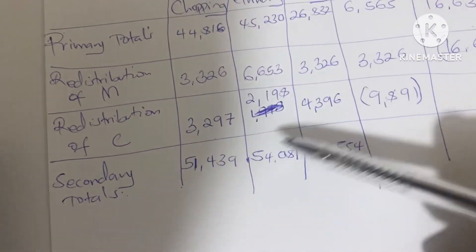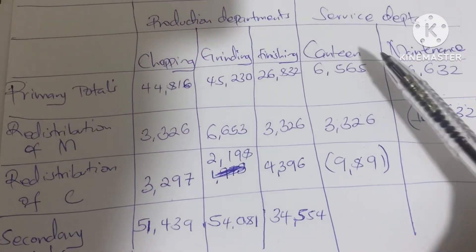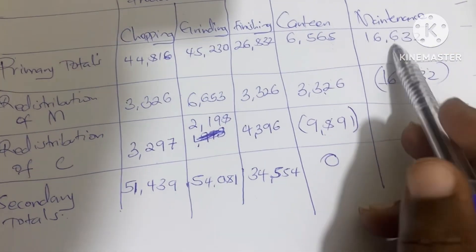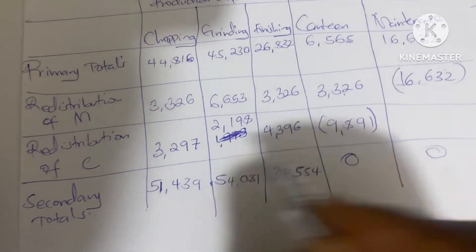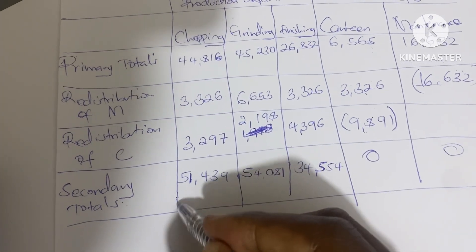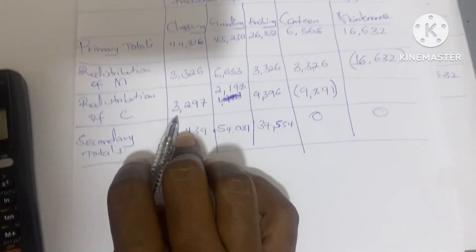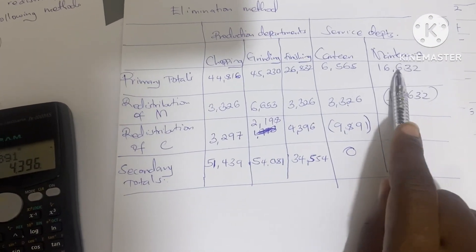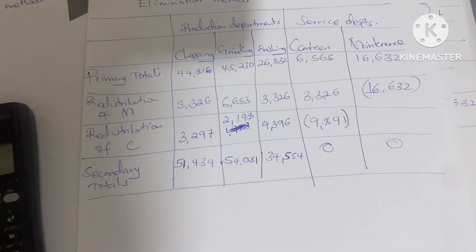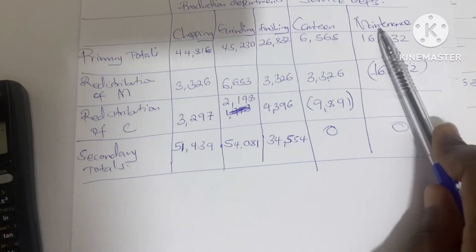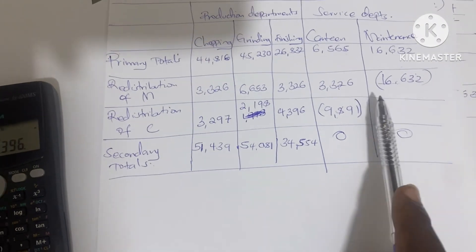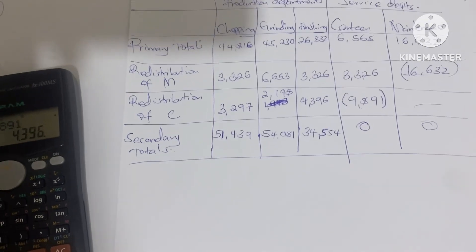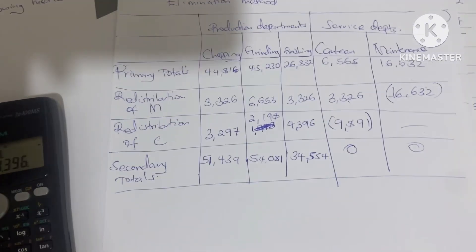We add the values to get our secondary totals. Adding the figures gives us: chopping 51143, grinding 54081, finishing 34554. The service department balances come to zero, confirming the elimination method is complete. The key steps are: write the primary totals, distribute the service department with the highest amount first, and do not distribute to a department that has already distributed.